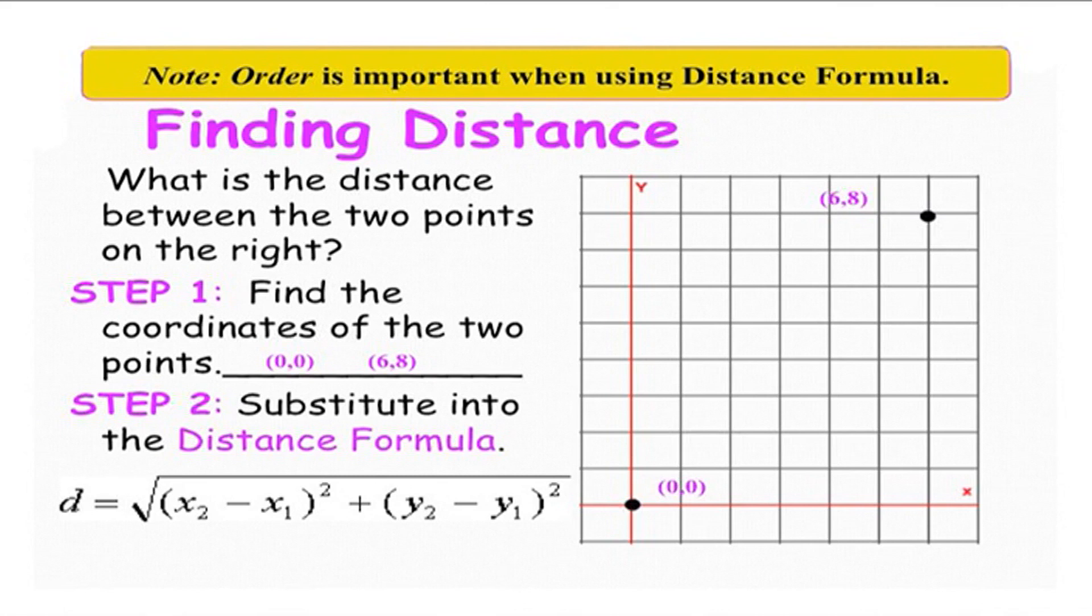It will be (6 minus 0) whole square plus (8 minus 0) whole square, which is 36 plus 64. We get it as 100, and after taking its square root, we find the distance as 10 units.